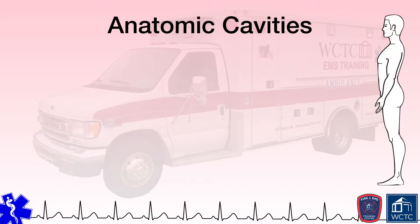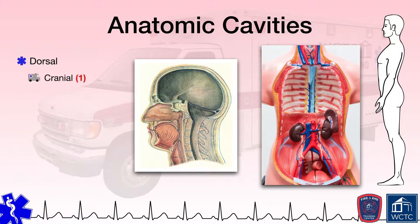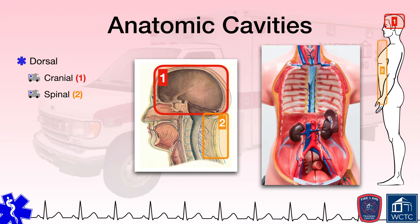Within the body lies several cavities, or void spaces, in which organs are held or contained. These cavities are classified given their location within the body. The first group are cavities considered to be toward the posterior, dorsal, or backside of the body. These dorsal cavities include the cranial cavity, which contains the brain, and the spinal cavity, which holds the spinal cord.